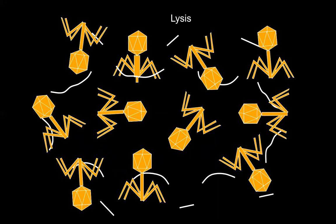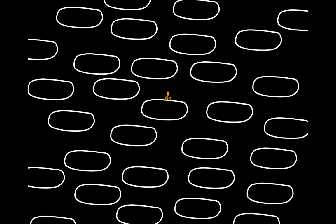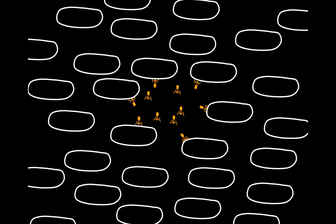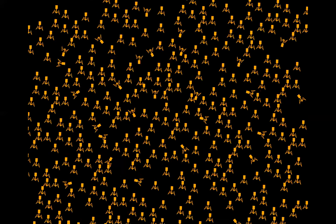When animal viruses and plant viruses infect cells, this is often the end result. Phage reproduce inside their host bacteria cells exponentially. Once a single cell is infected in a group of cells, it will very quickly spread new viruses to surrounding cells, and whole colonies can be wiped out in a very short amount of time.